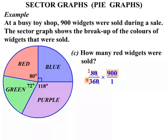Now the 9 and the 900 highlighted. 9 will go into both. So 9 goes into 900 one hundred times. And on the bottom, 9 into 9 goes once. So what have we got? 2 times 100 is 200. On the bottom, 1 times 1 is 1. Our denominator is 1, we can ignore it if that's the case. So 200 red widgets were sold.